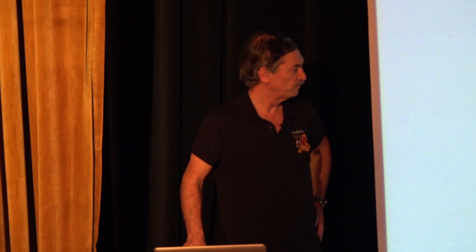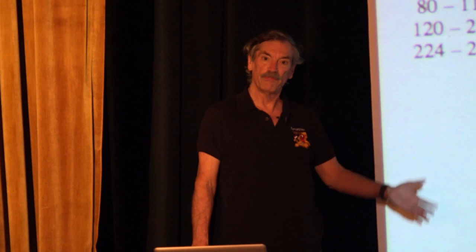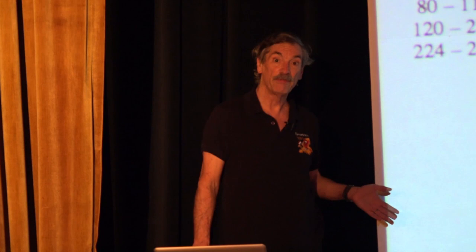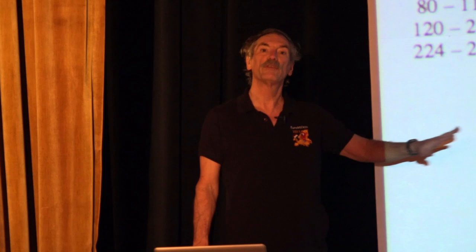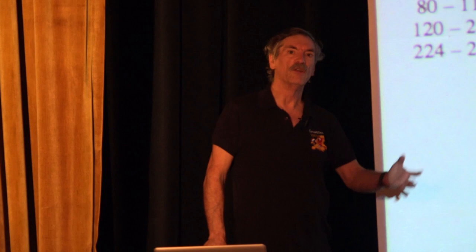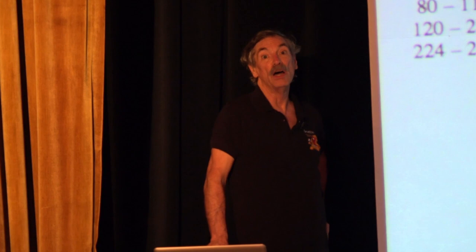Scheduling is how we decide when and where and for how long to run all the threads that are in the system. There are threads in the operating system, threads in the applications that are running. A particular process may have a single thread or a whole set of threads. These threads get divided into five different classes. We have the iThread, which is all the things running in the bottom half of the kernel — primarily all the interrupts coming in, disk interrupts, network interrupts, timer interrupts, anything that delivers interrupts and requires a thread to process them.